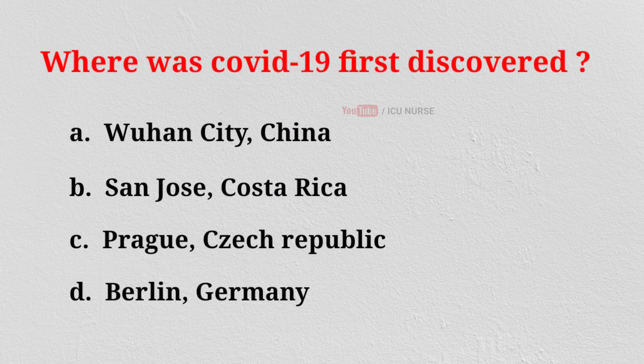Where was COVID-19 first discovered? A. Wuhan City, China. B. San Jose, Costa Rica. C. Prague, Czech Republic. D. Berlin, Germany. And the correct answer is?